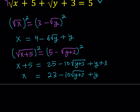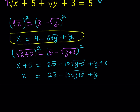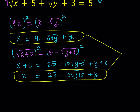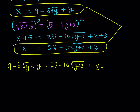So on one hand I have the first equation, and in the second equation I have x by itself again. Since they're both equal to x, I can set them equal to each other. I'll set 9 minus 6 root y plus y equal to 23 minus 10 times the square root of y plus 3, plus y. The y's cancel out, leaving only radicals. I want to isolate one radical, so I'll leave the negative 6 root y here and subtract 9 from both sides, giving me 14 minus 10 times the square root of y plus 3.